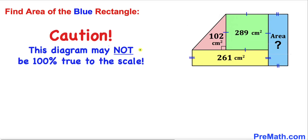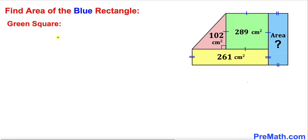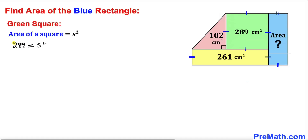Let's get started. Note that this diagram may not be 100% true to scale. Let's focus on the green square and recall the area of square formula, which is equal to s squared, where s represents the side length. The area has been given to us as 289 centimeters squared, so 289 equals s squared. Taking the square root on both sides, our side length s turns out to be 17.